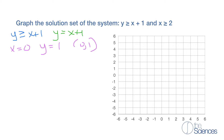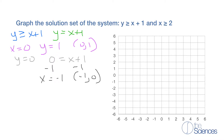Now we're going to set y equal to 0 and solve for x. So when we do that, we get 0 equals x plus 1. We subtract 1 from both sides and we get x equals negative 1. So our second point would be (negative 1, 0).